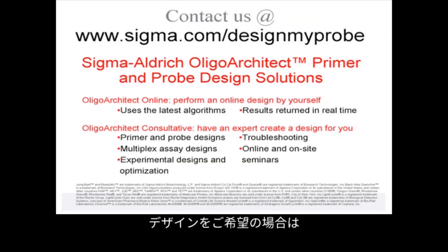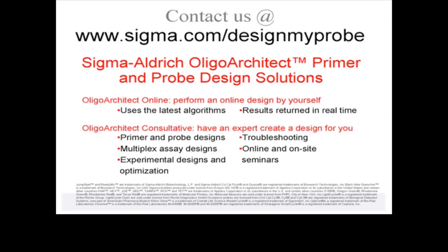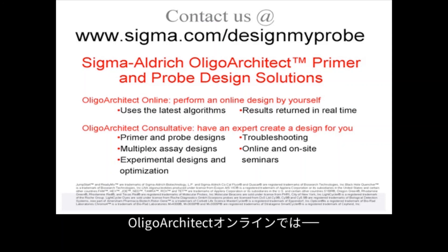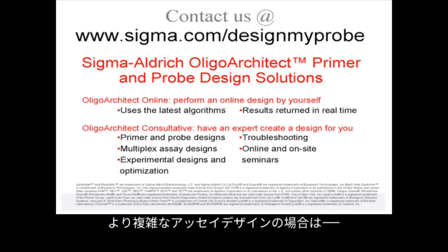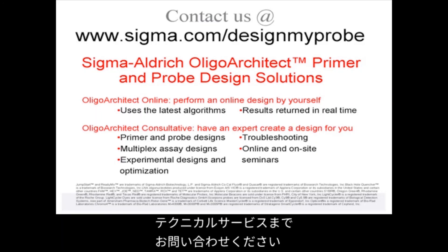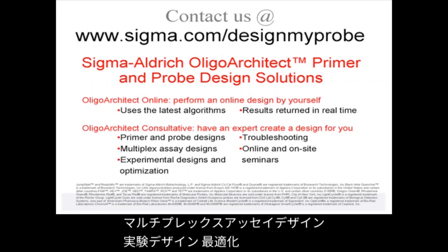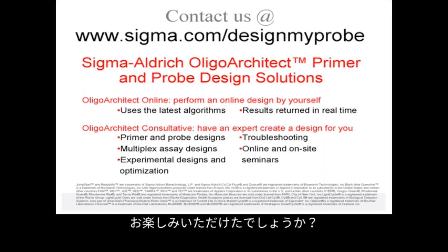If you would like some assistance with the design, you can contact us via www.sigma.com/designmyprobe. This will take you to the site called OligoArchitect Primer and Probe Design Solution. Here, you can either click OligoArchitect Online, which allows you to design the primers and probes yourself, or for more complicated assay designs, you can select the second option, OligoArchitect Custom Design, where you will be put through to an expert who will create a design for you. Our services also include primers and probe design, multiplex assay design, experimental design and optimization, troubleshooting, and online seminars. Hope you have enjoyed this talk — thanks for listening.